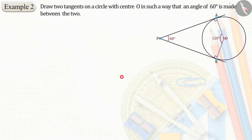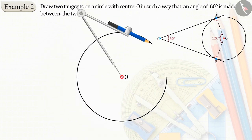First of all, consider point O as the center. Let's draw a circle of an appropriate radius.